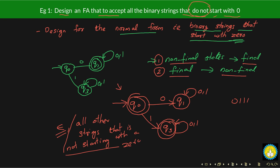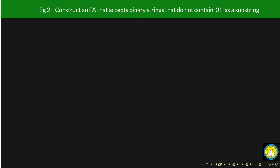We will look at one more example. Construct an FA that does not contain zero-one as a substring. We can easily identify this is a complement representation, and the normal representation would be: construct an FA that contains zero-one as a substring. We will design a DFA to accept strings that contain zero-one as a substring, and once done, we can design the complement.